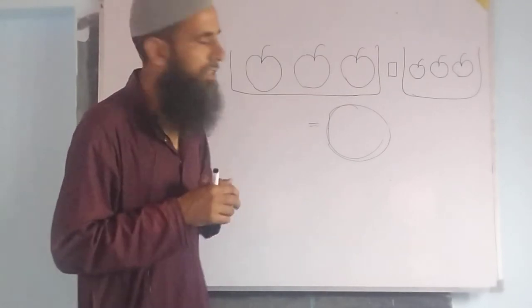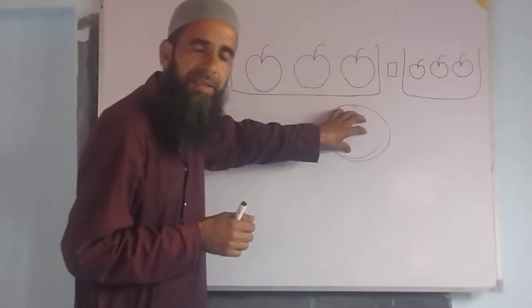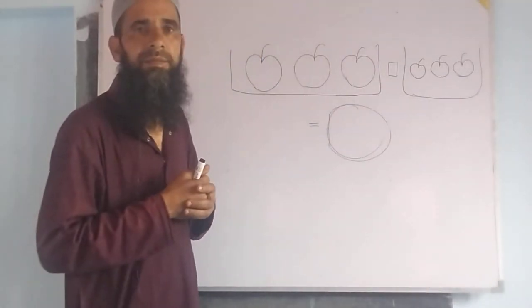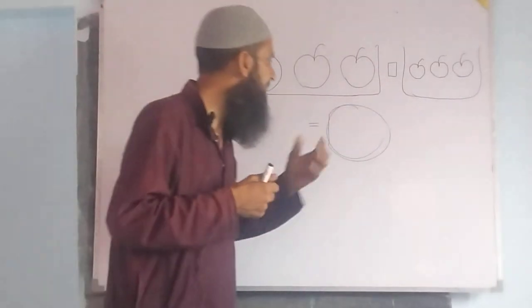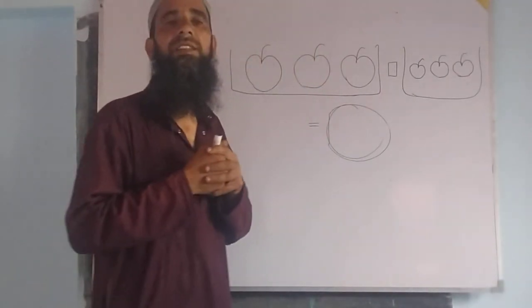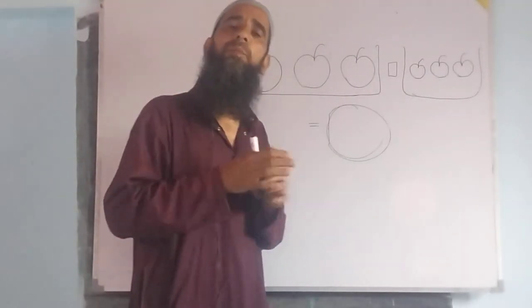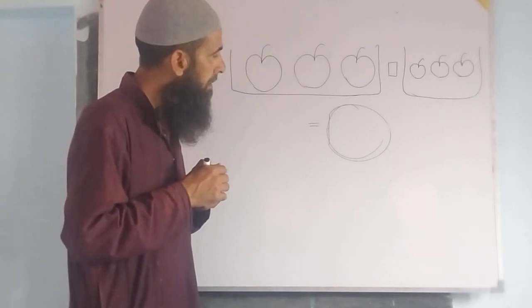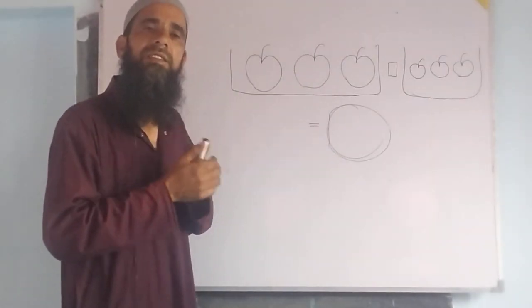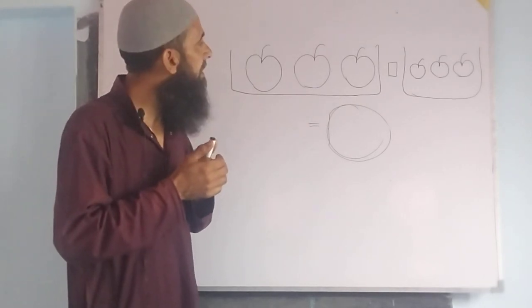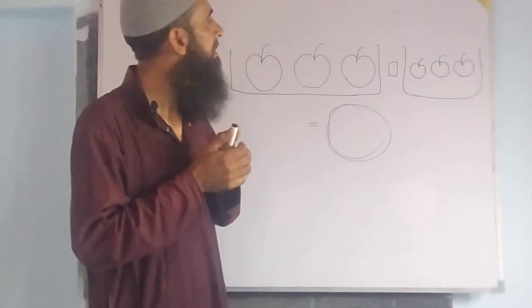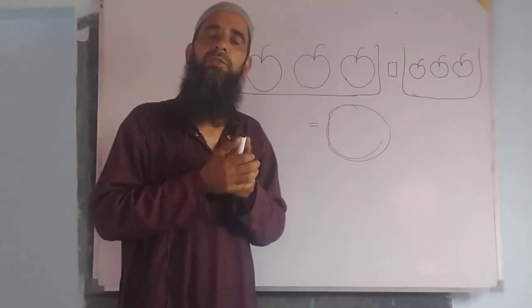I will ask you a question: how many possibilities are there? How many numbers can come in the number system, considering the properties of the number system with respect to the basic operations?